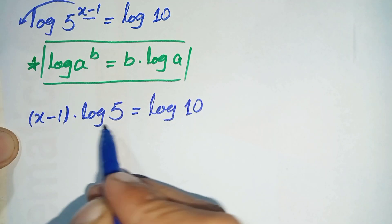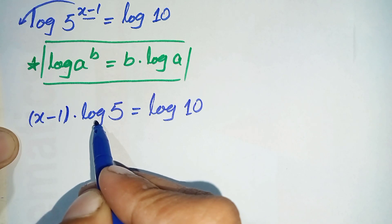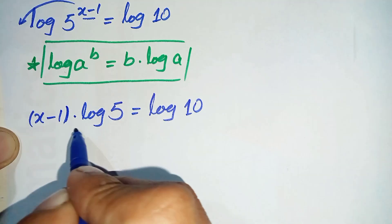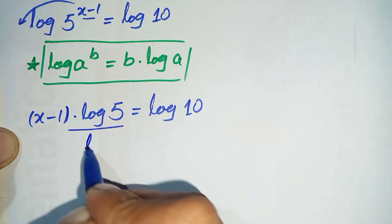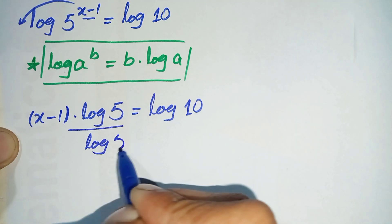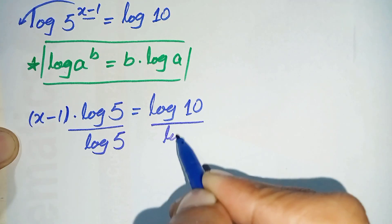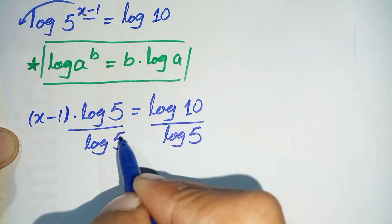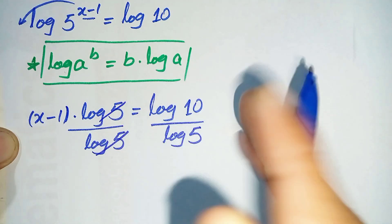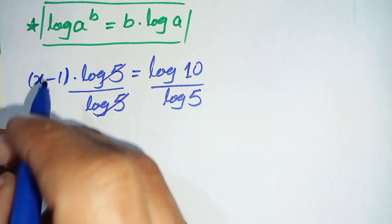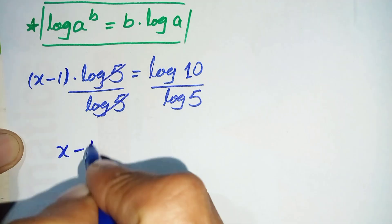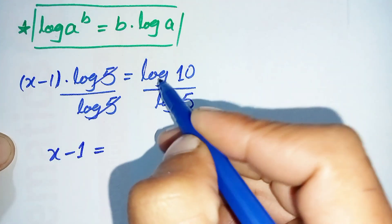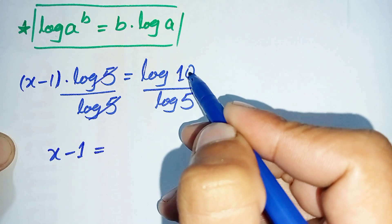Since we need to find the value of x, we will try to eliminate log 5 from the left hand side. To eliminate it, we divide both sides by log 5. On the left hand side, log 5 cancels, leaving only x minus 1.